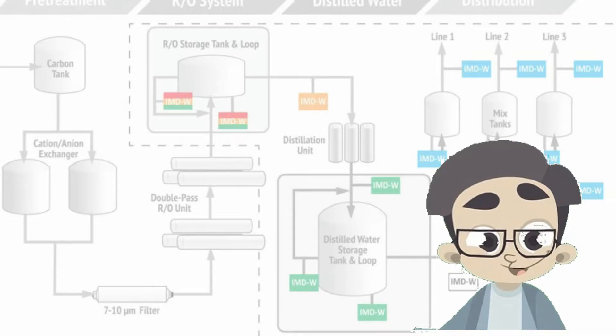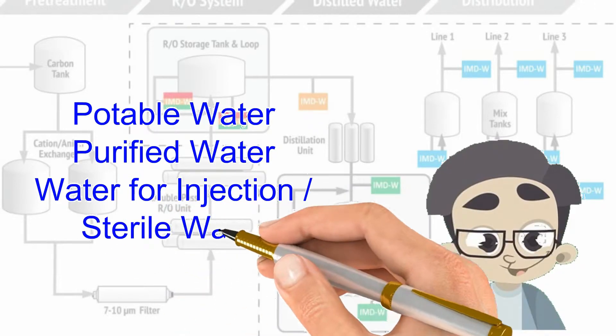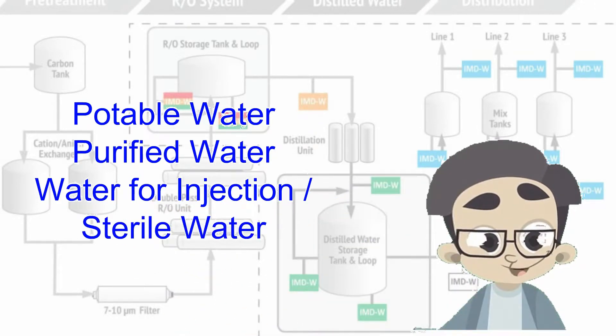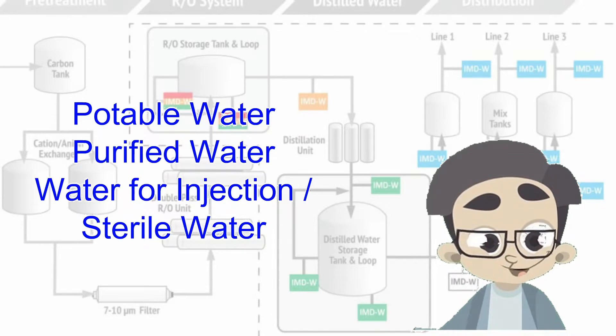Before going into the details of the system, let us first see different types of water that are normally seen in a pharmaceutical industry. We have potable water, purified water, and water for injections, also known as sterile water. What are these classes of water?